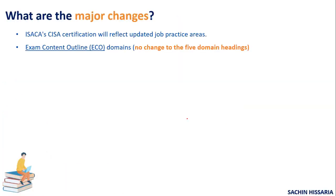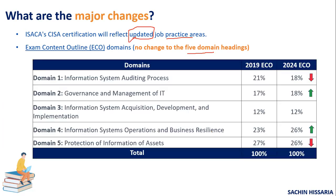The first point is: what are the major changes? In the CISA syllabus, they have issued a notification that they are going to update the job practice areas. As you might be aware, currently in CISA there are a total of five domains. As such, there is no change in the five domain names — whatever five domain headings exist in the current syllabus will remain the same.